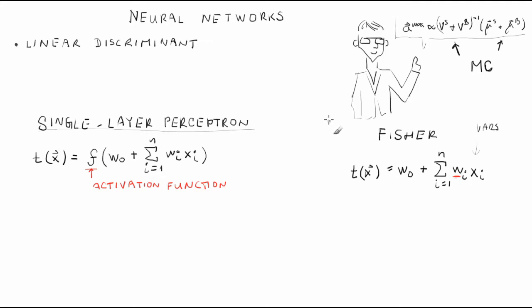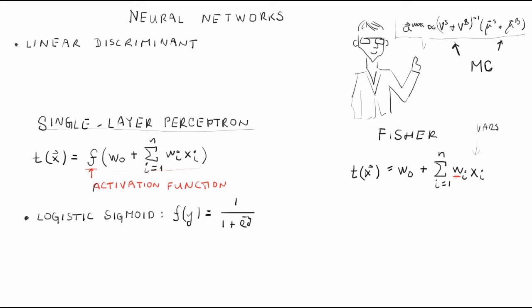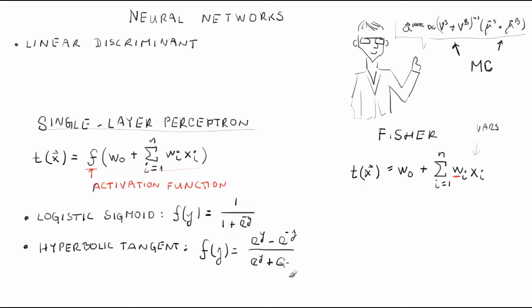If the activation function is monotonic, its presence makes no difference for the single layer perceptron. However, you will see later that the activation function is a key ingredient of a general neural network. A common choice is the logistic sigmoid: f(y) = 1 / (1 + e^(-y)). Another common choice is the hyperbolic tangent: f(y) = (e^y - e^(-y)) / (e^y + e^(-y)).